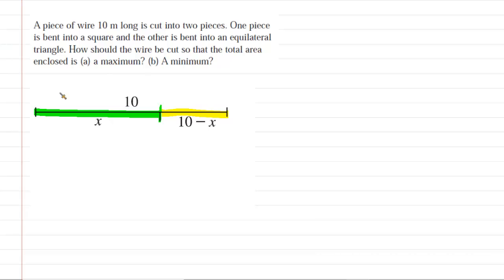We'll take the portion that we've labeled x, and we're going to bend that into a square. So if we did that, we would obtain a picture that looks something like this.